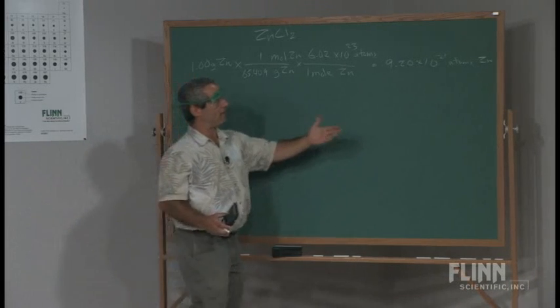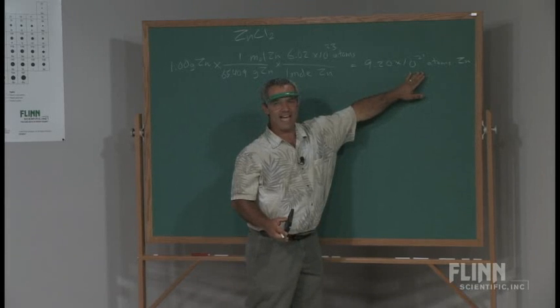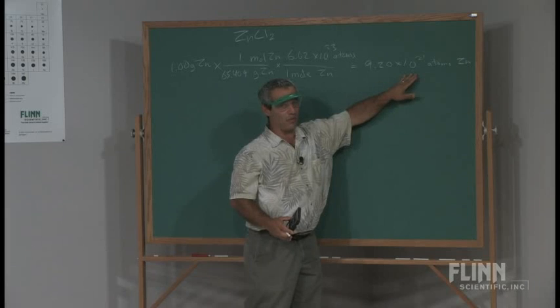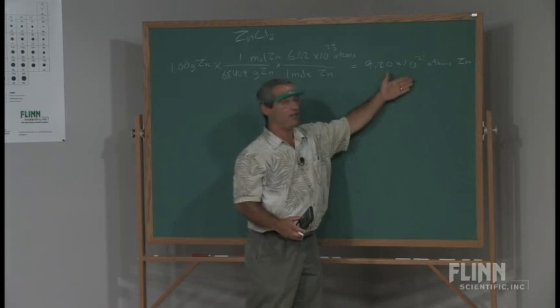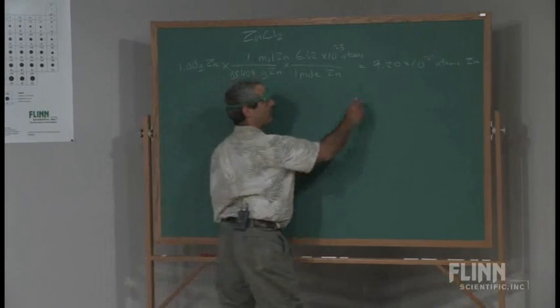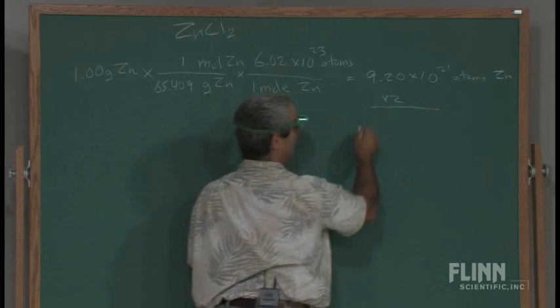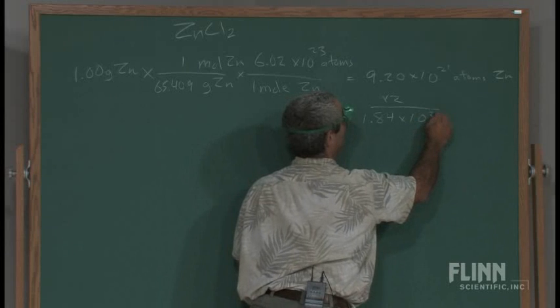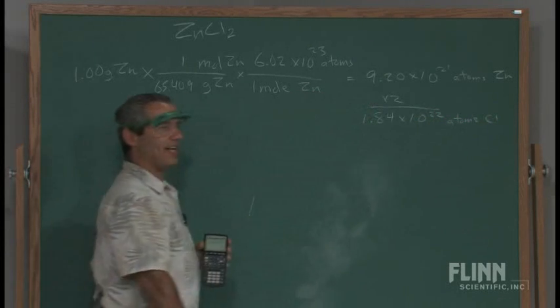The brighter students just kind of figure this out on their own, others maybe need a little help. One atom of zinc would react with two atoms of chlorine. A hundred atoms of zinc would react with two hundred atoms of chlorine. A million would react with two million, so this would react with twice as much. So you simply take this, multiply it by two. You're going to get 1.84 times 10 to the 22nd atoms of chlorine.